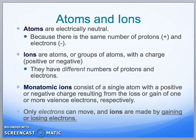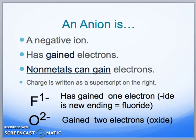When we go into monatomic ions, this consists of a single atom with a positive or negative charge resulting from the loss or gain of one or more valence electrons. Only electrons are the ones that are going to be moving — we're not going to be moving protons. So the gain or loss of an electron is going to cause that positive or negative charge.